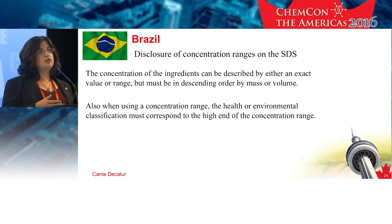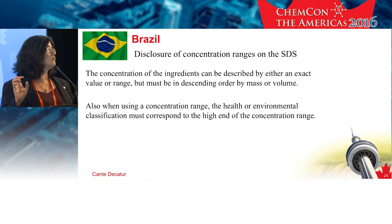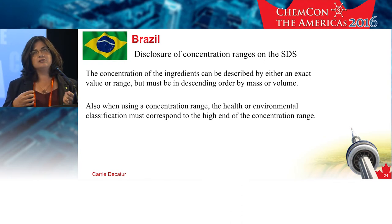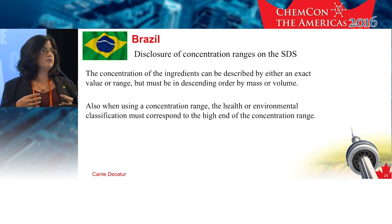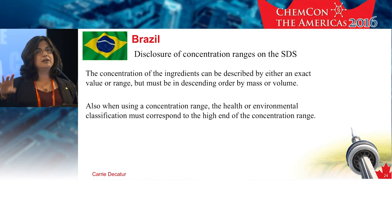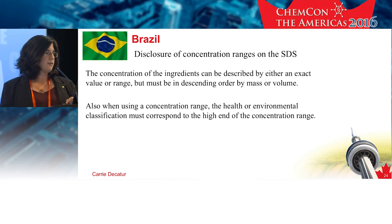When you have a range, your classification in Section 2 must be aligned with the upper end of the range in Section 3. So you've got to be careful — if you're putting ranges in to mask your exact concentration values, your classification must match what's at that upper level of the range. For Chile, they updated their SDS standard, and in it they referenced both their current classification standard and the GHS. Depending on which one you're classifying by, it gave information on what you should output on the SDS.